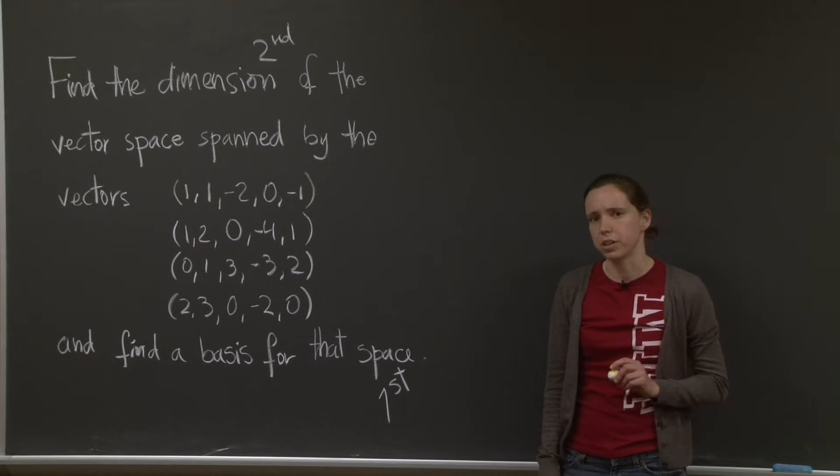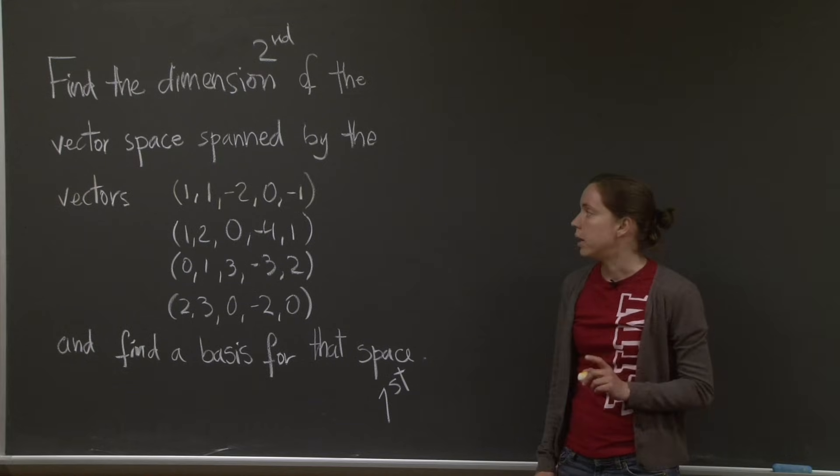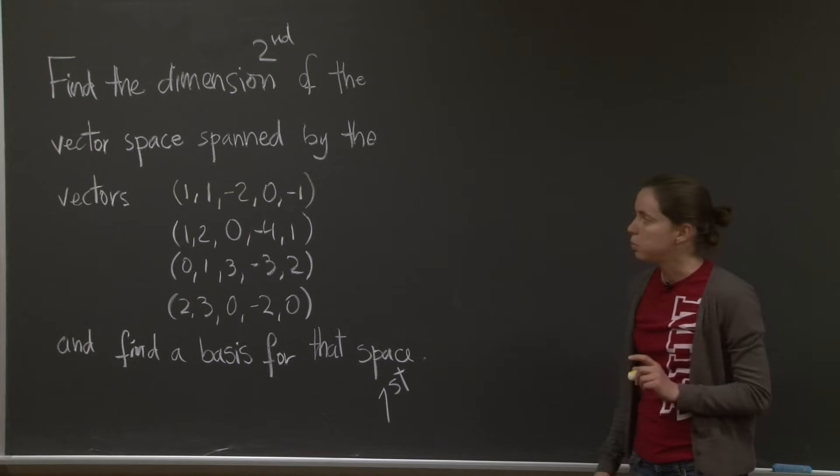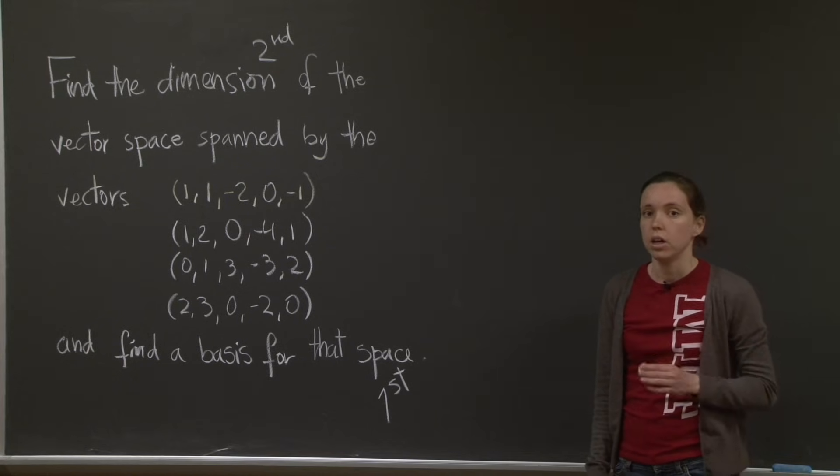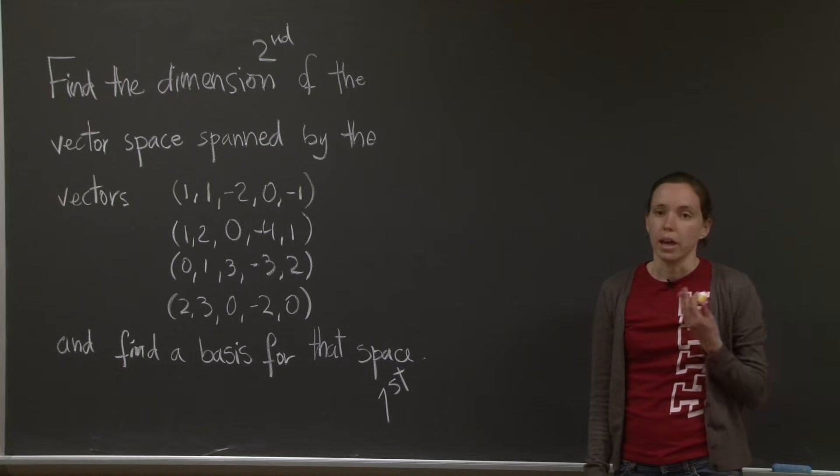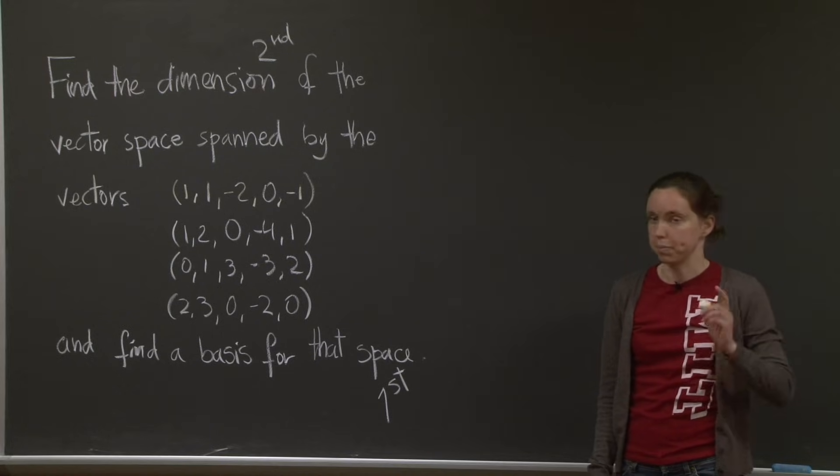How do we check that four vectors are linearly independent? Well, there's a couple of different ways, but here's what we're going to do. We're going to put these vectors as rows of a matrix, and then we'll do elimination. And when we get to the end, the rows that have pivots are the independent ones. So let's do that.